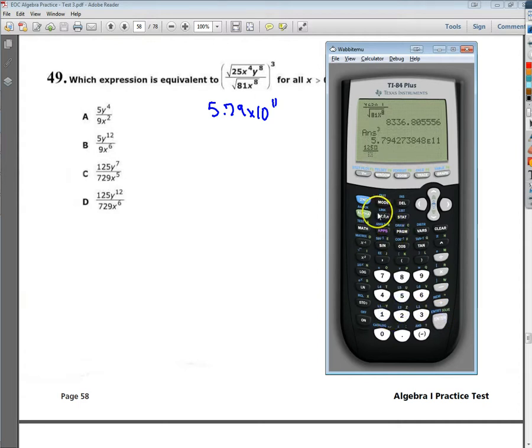125 over 729. I'm going to go straight to the answer I predicted was the answer to see if it matches. Over 729x to the 6th power. It helps if you raise it to the 6th power. So I hit enter, and you can see it's exactly the same thing. So the answer is D.